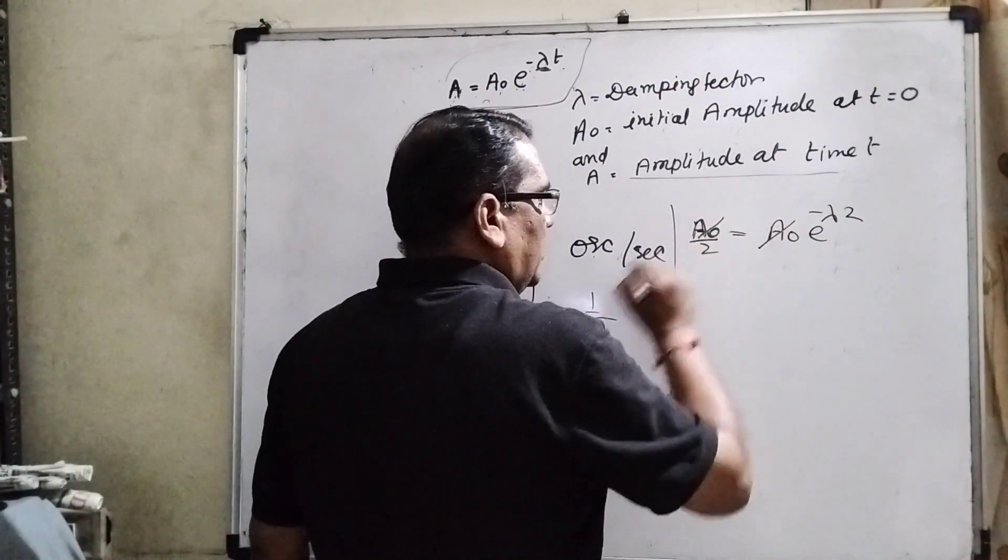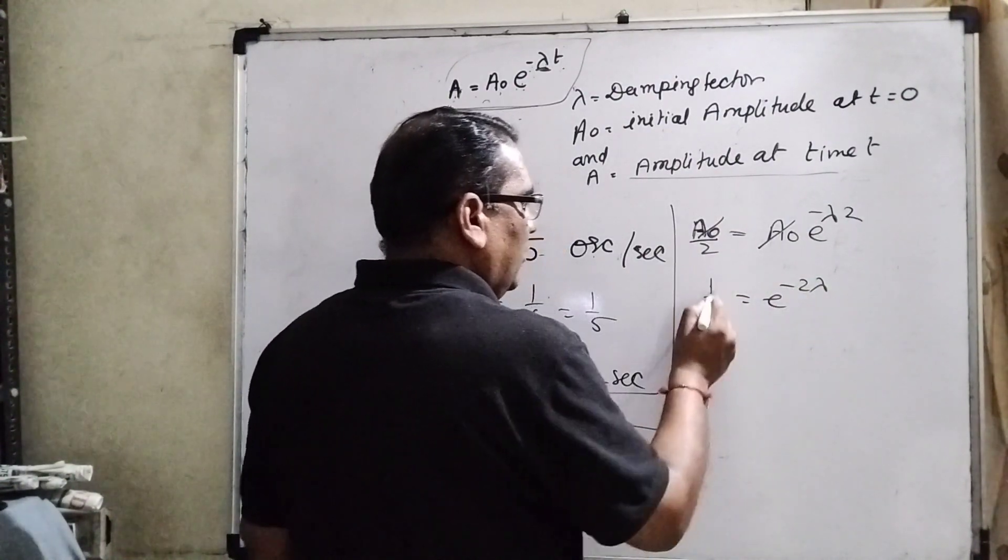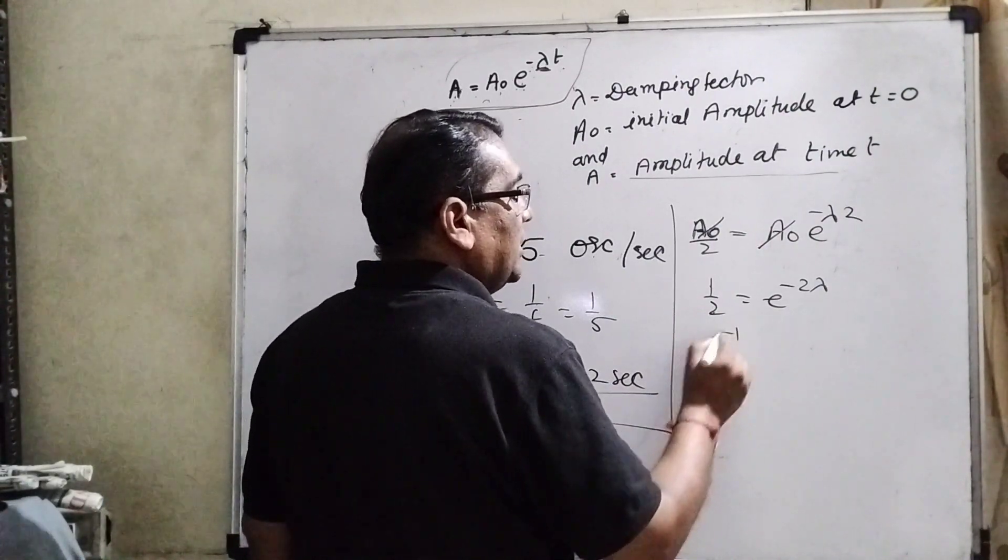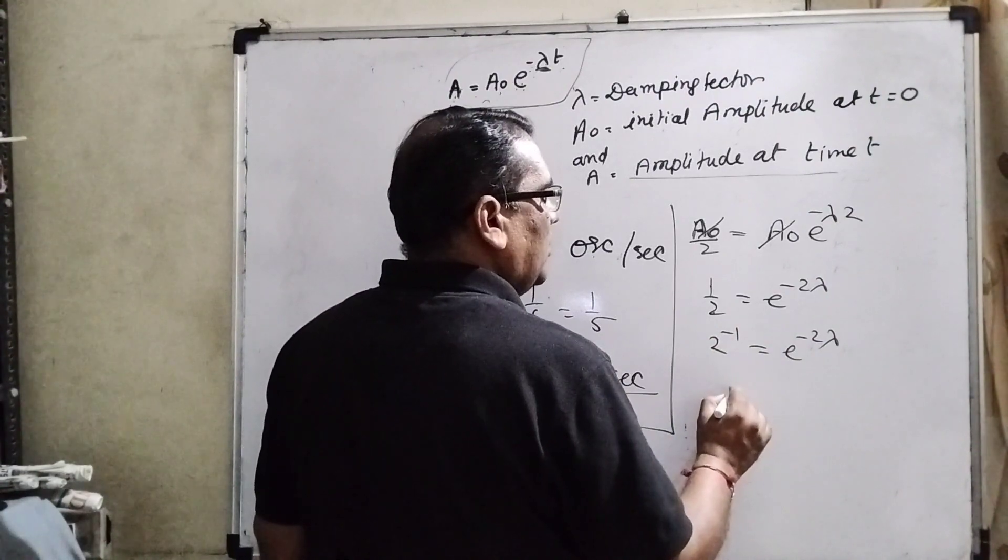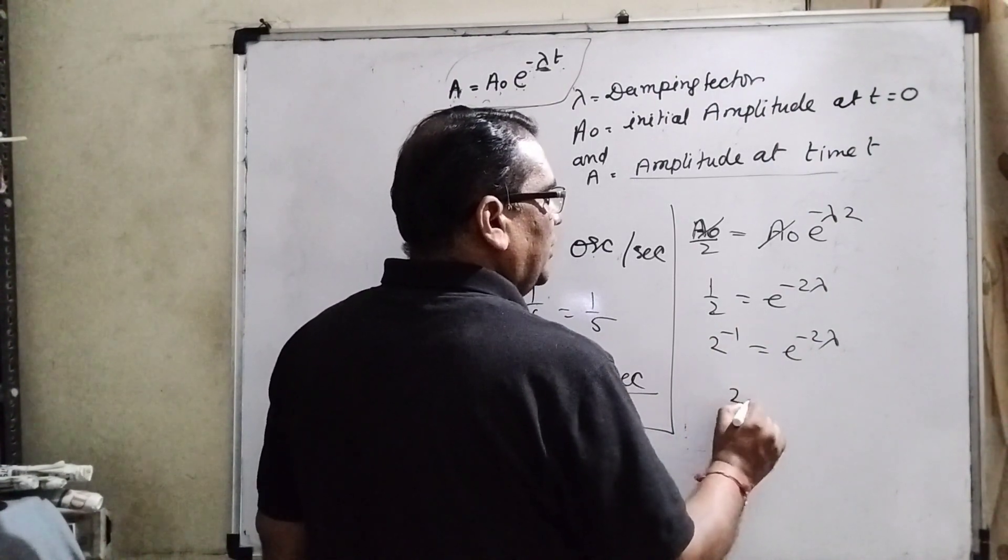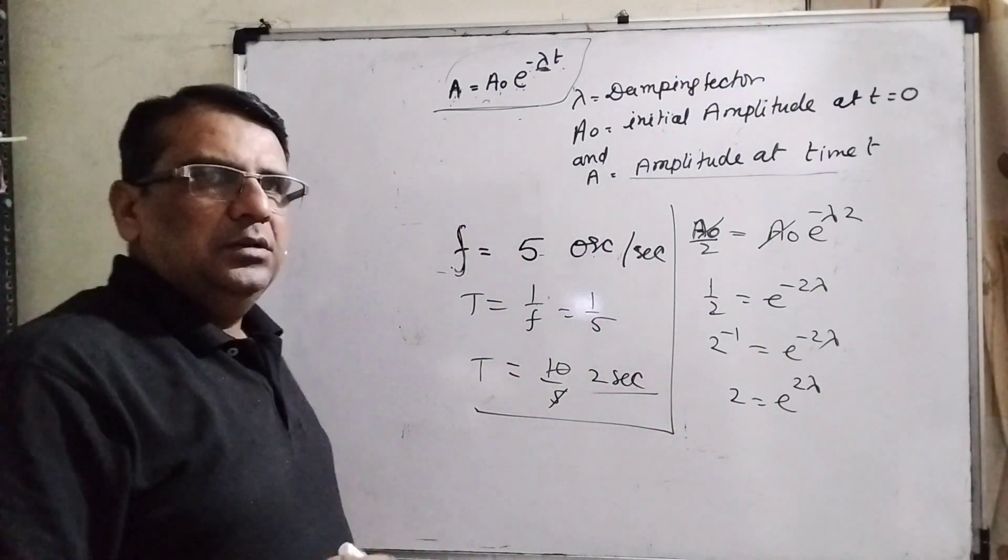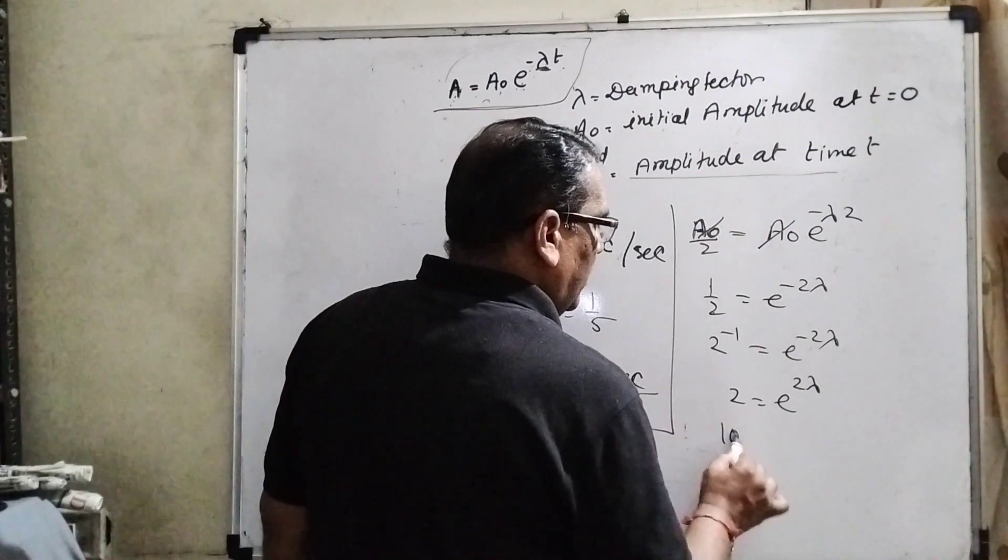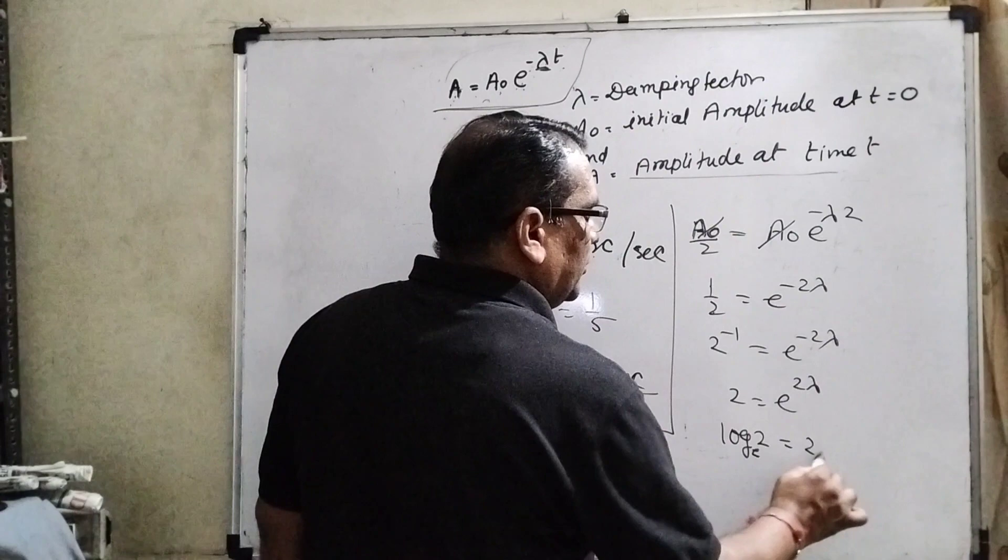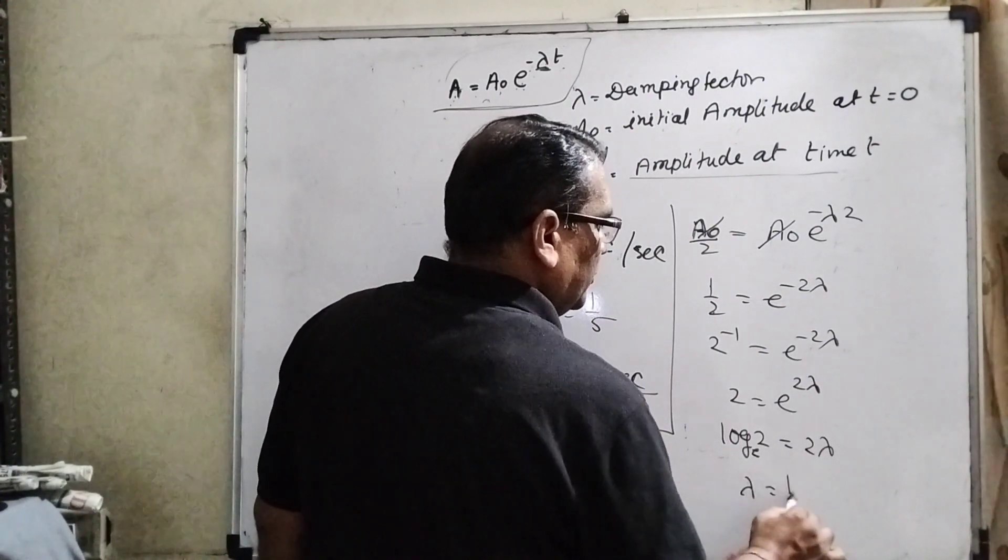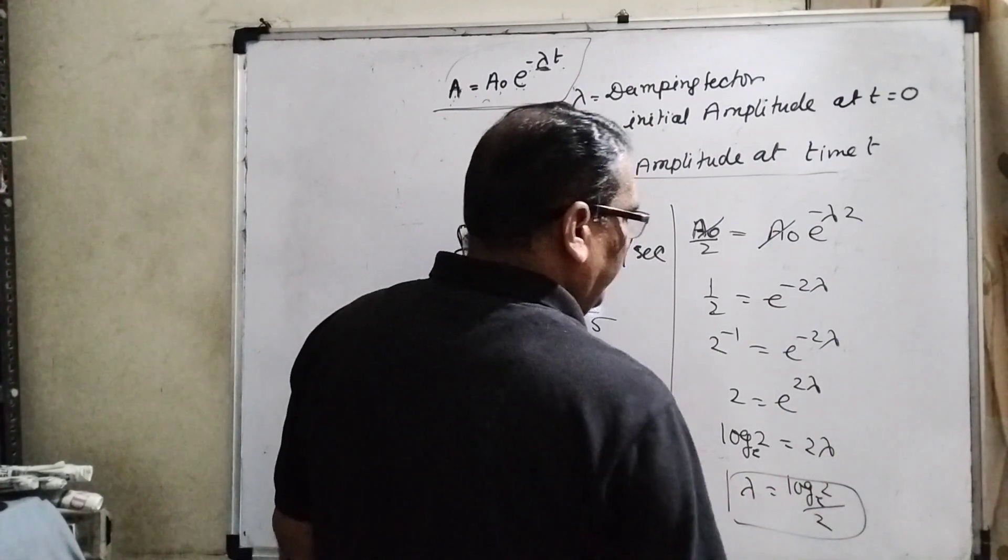So here A naught, A naught cancel out. 1 by 2 equals e raised to power minus 2 lambda. 1 by 2 can be written as 2 raised to power minus 1. Minus minus cancel out, then 2 equals e raised to power 2 lambda. Now it can be written in the form of log: log 2 to the base e equals 2 lambda. So we get the value of lambda.